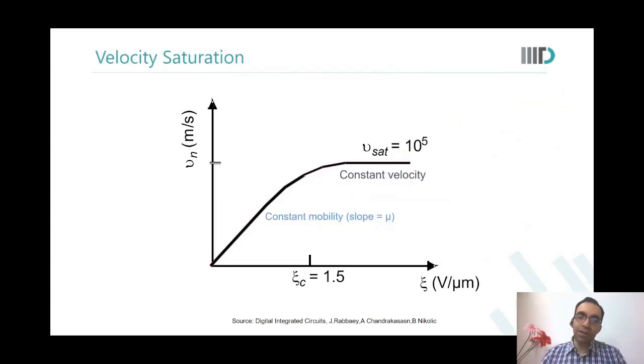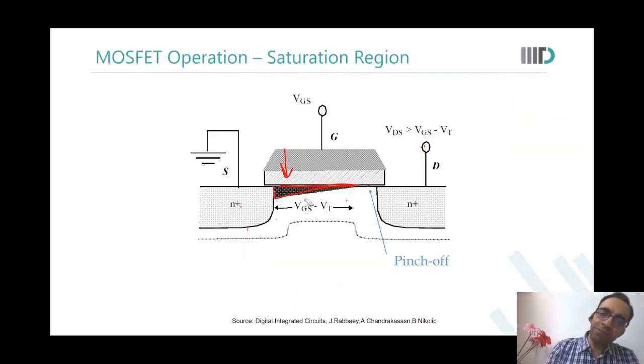So what also happens is in silicon, till the time we have limited electric fields in the channel region - let us go back to the previous slide - till the time we have limited electric fields in this channel region, as you apply more voltage on drain, the electric field increases. So as you increase the voltage on drain, the velocity of electrons over here increases.